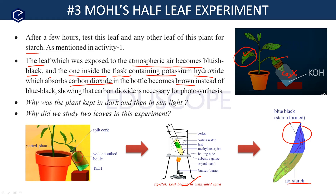So what does this experiment show us? It shows that carbon dioxide is necessary for photosynthesis. After doing this experiment, we test the leaf using the test for presence of starch — boil the leaf in alcohol, then apply iodine. The part exposed to air turns blue-black; the part inside the bottle shows no color change — there is no starch there.